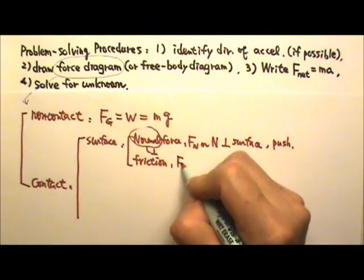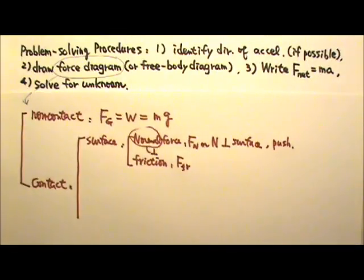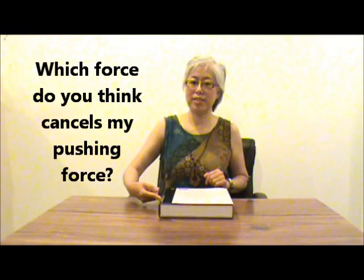For friction, we write F-sub-FR. Now I'm pushing on the book to the right. If I don't push hard enough, the book does not move. If it stays at rest, the net force acting on it must be zero. The gravity is canceled by the normal force. The friction from the table cancels my pushing force. So if the book has a tendency to slide to the right, friction will go to the left, parallel to the contact surface.